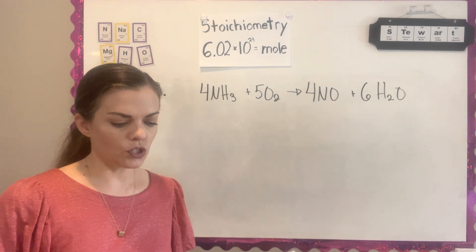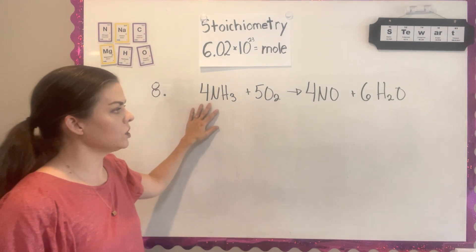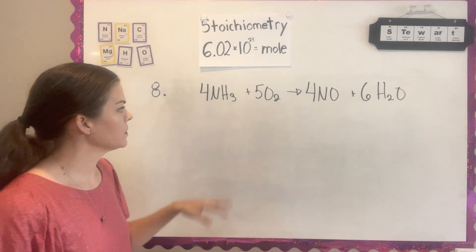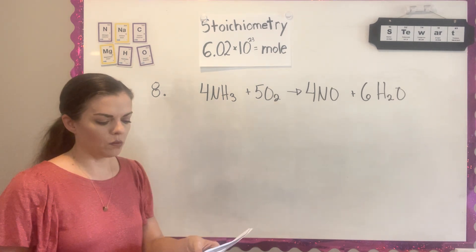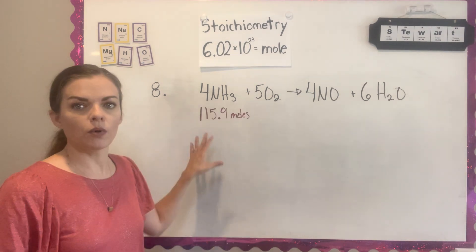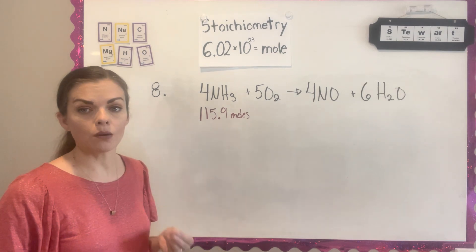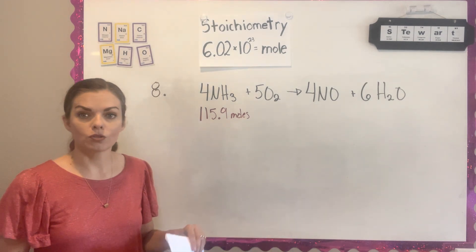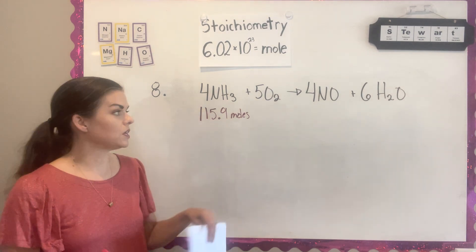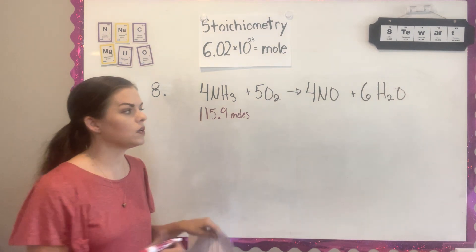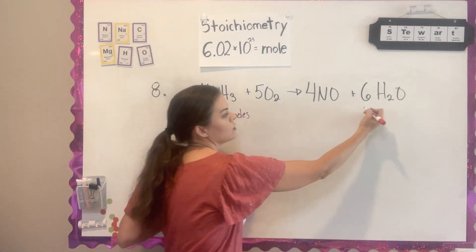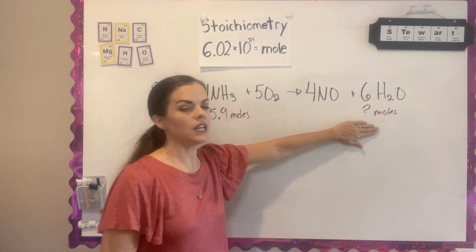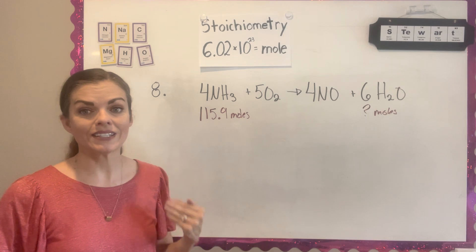The question for Chapter 8 tells us that ammonia can be burned according to a balanced chemical reaction they provide. When burning ammonia, if I burn 115.9 moles of ammonia using excess oxygen — meaning we have as much oxygen as we need — the question is asking how many moles of water are produced.